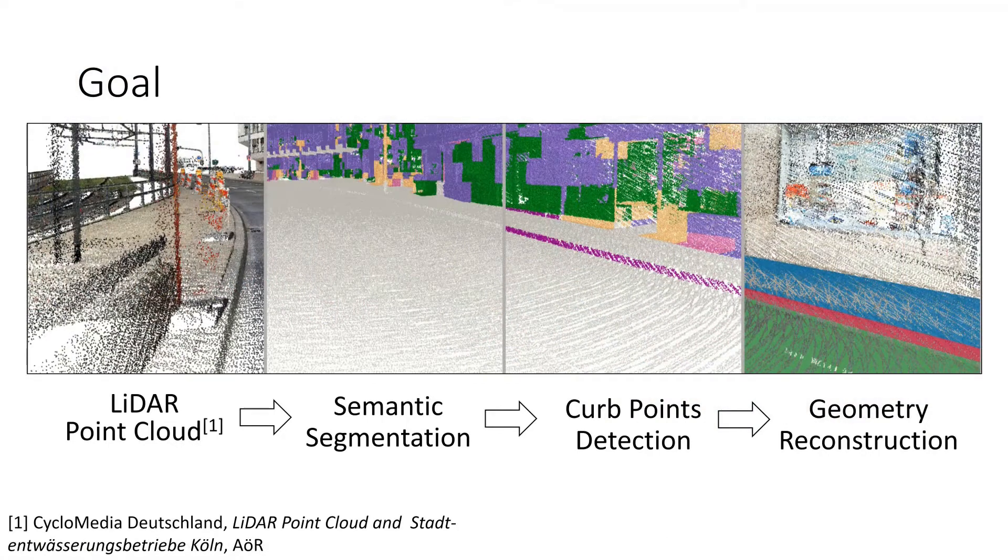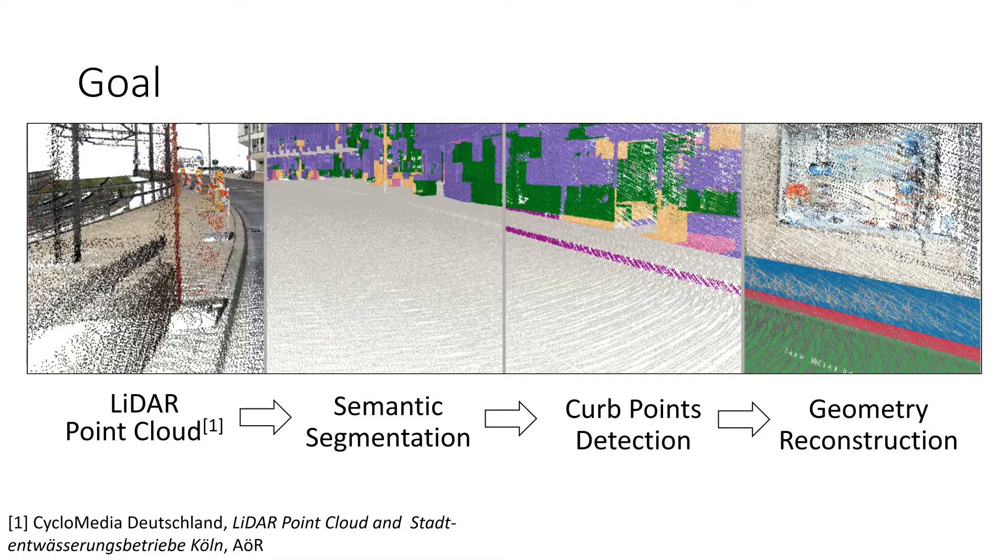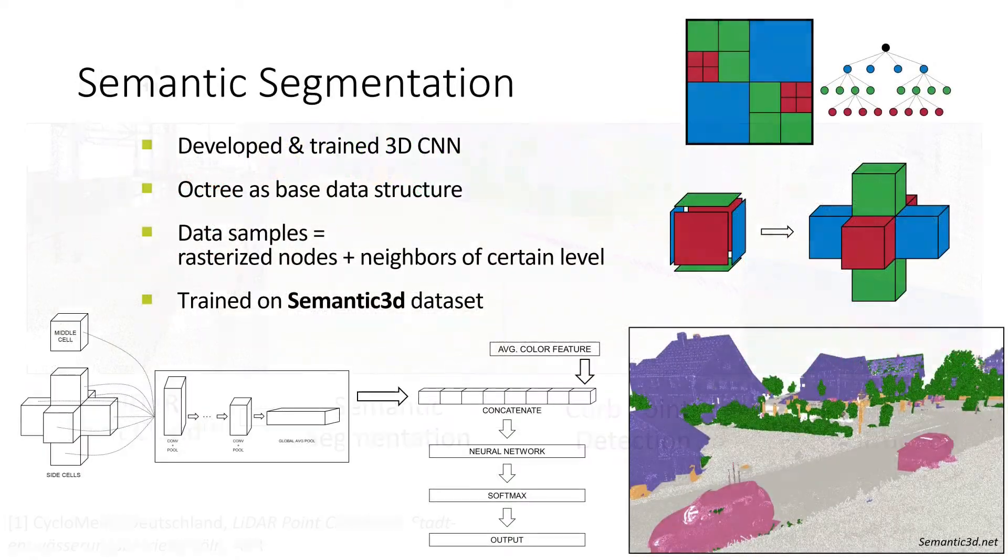Our goal is to efficiently and robustly reconstruct sidewalk geometry from very large mobile mapping point clouds by using semantic segmentation and curb point detection. We use sparse octree voxelization and take neighboring cells into account.